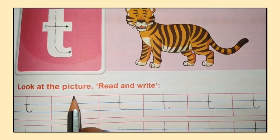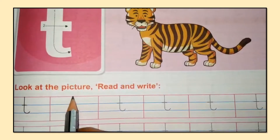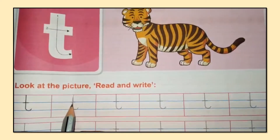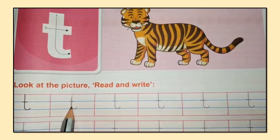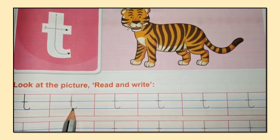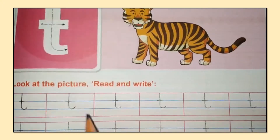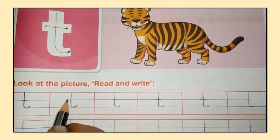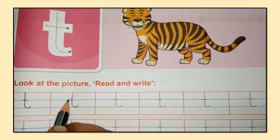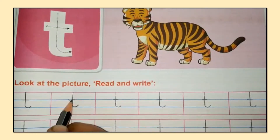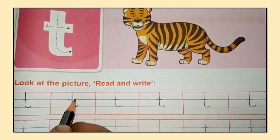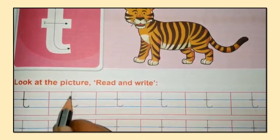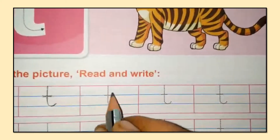For small T, we will start from the red line. Make a standing line, go down, then make a small curve, and go to the middle of the standing line. Make a slipping line crossing the standing line — that is small T.